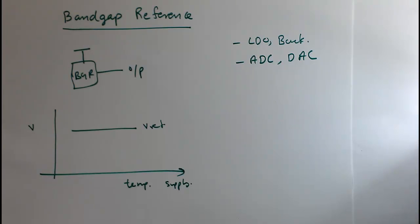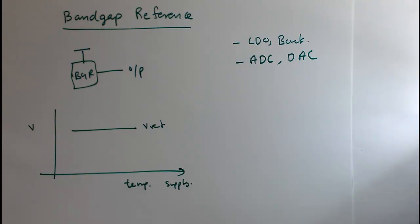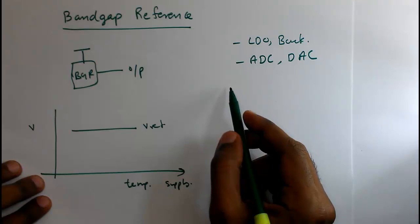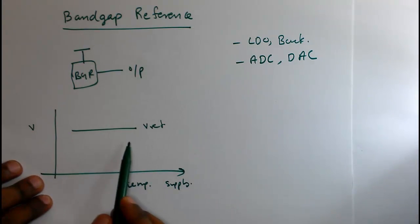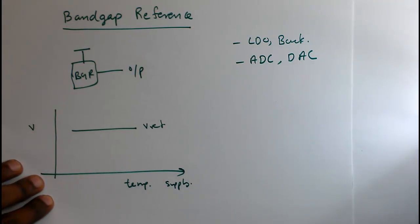Not only that, the temperature will also be developed inside the IC itself. When we start an IC, the temperature will be at one point, and when it is working, heat will develop and temperature will increase — the temperature of the IC will vary. But we do not want any change in our reference voltage. That is why our reference voltage should be constant with respect to temperature and supply.